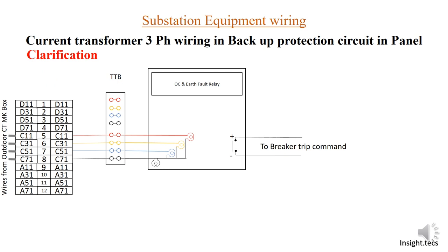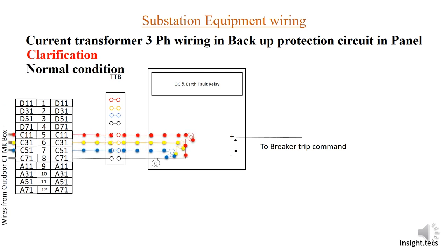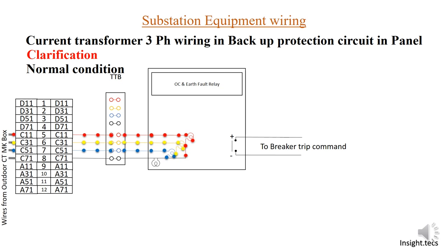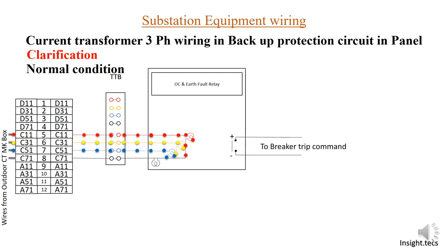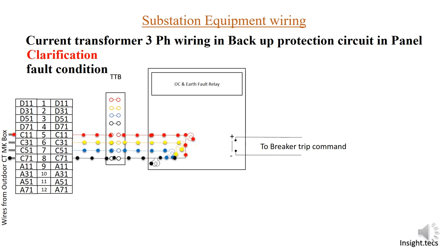There is one clarification about how current flows in a three-phase balanced system. In a balanced three-phase system, current flows only through the three phases — there is no current flowing in the neutral. However, when a fault occurs in any phase, an unbalanced amount of current flows through the earth. Whenever this unbalance occurs, a tripping command is sent to the breaker and the breaker trips.